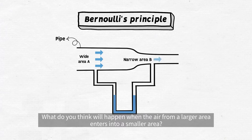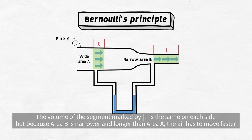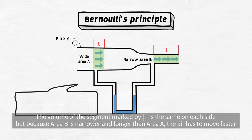What do you think will happen when the air from a larger area enters into a smaller area? In order for the same amount of air to flow through area A and area B in the same amount of time, the velocity will have to be higher in area B. The volume of the segment marked by T is the same on each side, but because area B is narrower and longer than area A, the air has to move faster.